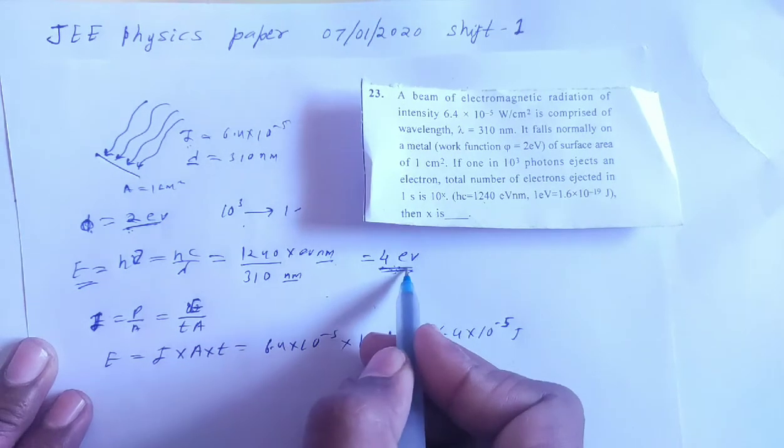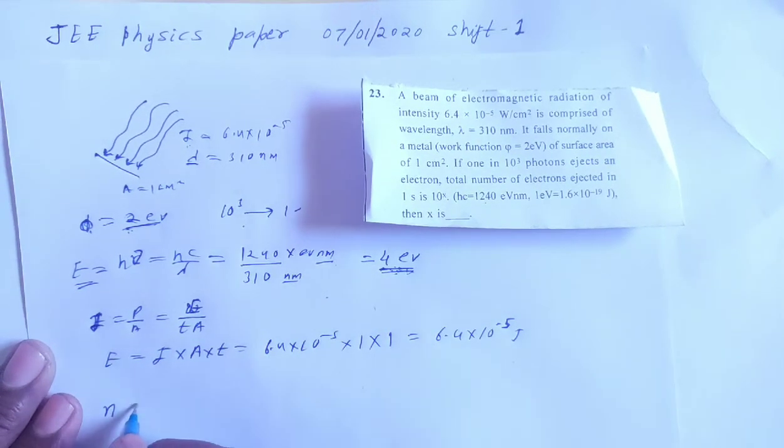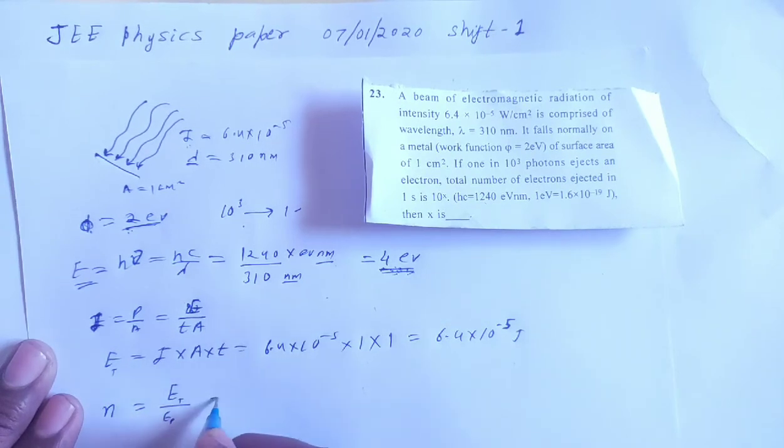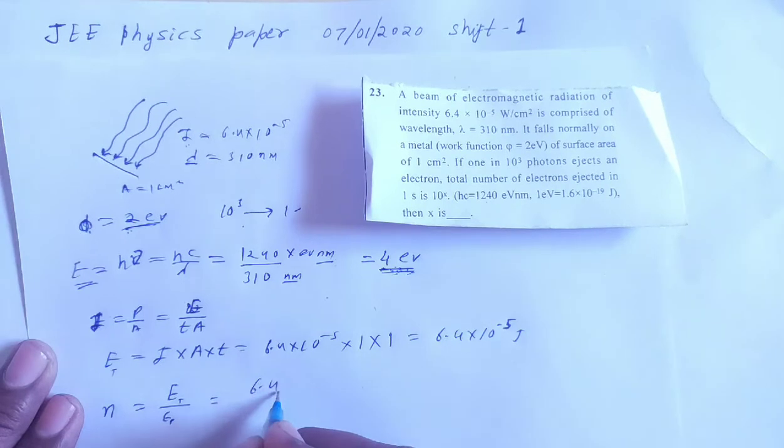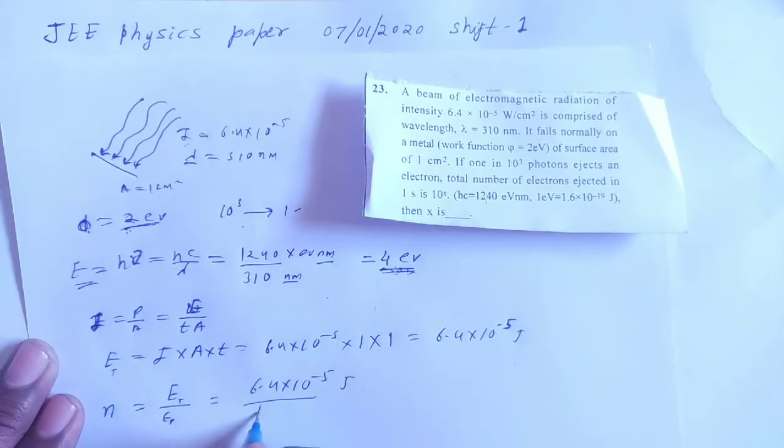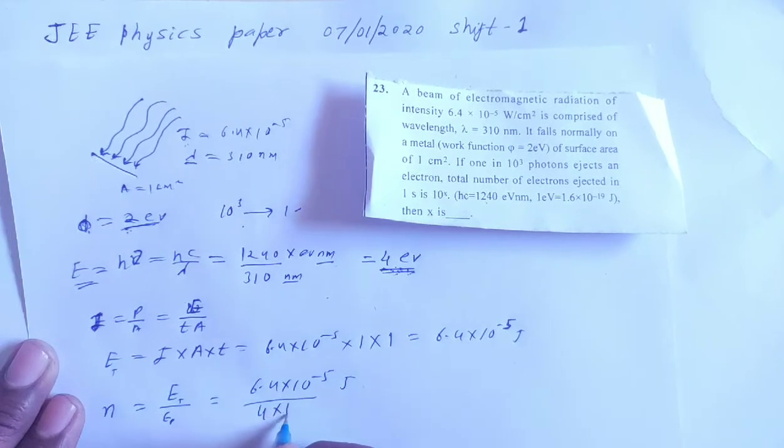Number of photons equals total energy upon one photon energy. Total energy is 6.4 × 10⁻⁵ joule and one photon energy is 4 electron volt.